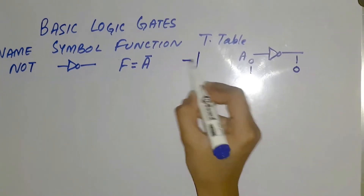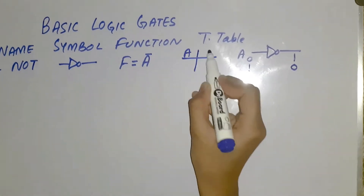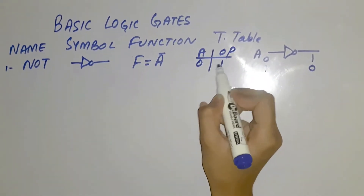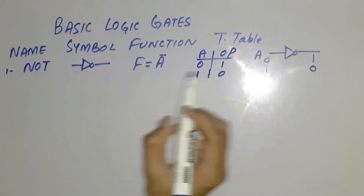So the truth table has input a and output. 0 will become 1 and 1 will become 0.